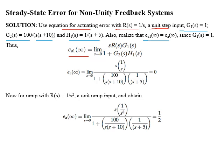We also realize that ea1(∞) equals ea(∞) because G1(s) = 1. So we will use the given relation to find steady state error. For step input, R(s) = 1/s, and replacing R(s) by 1/s we get steady state actuating error equal to 0. For ramp input, R(s) = 1/s². Replacing R(s) by 1/s² in the steady state actuating error relation we get a value of 1/2.